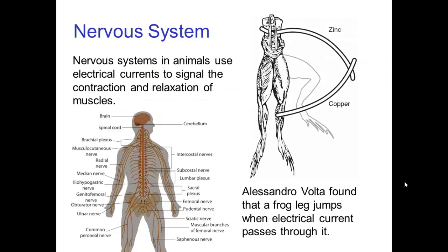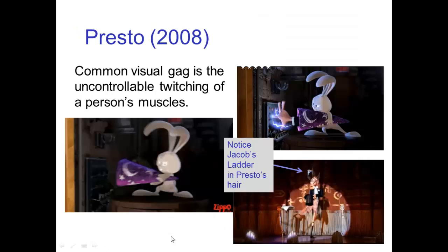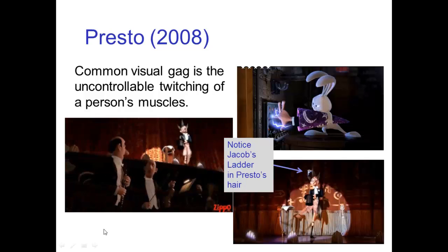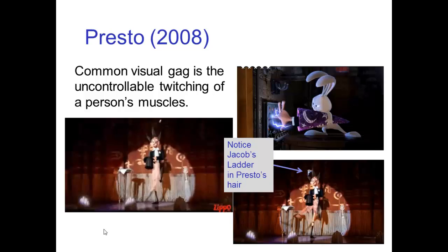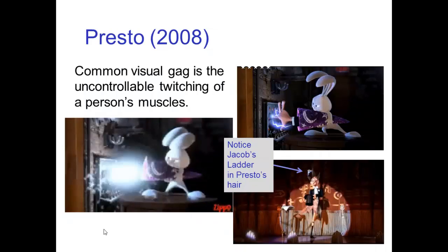An important example of electric current is the nervous system in the body. Animals have a nervous system that operates by small electric currents that activate the contraction and relaxation of muscles. This was discovered in early experiments with electricity by Alessandro Volta, who found that if he connected a battery to a dead frog, he got a reaction from the muscles of the frog. This effect of electric current causing twitching of muscles appears in many cartoons — here's an example from Presto, showing the uncontrolled twitching of the magician when his hand is stuck in the electric circuit.